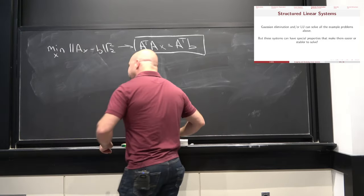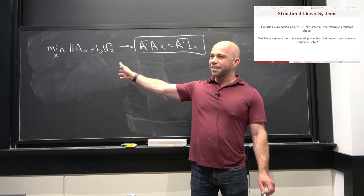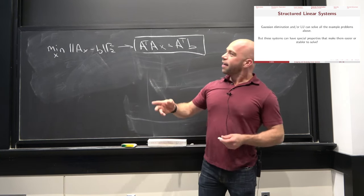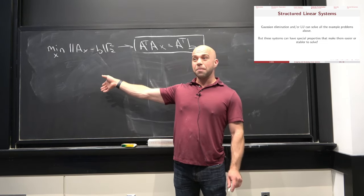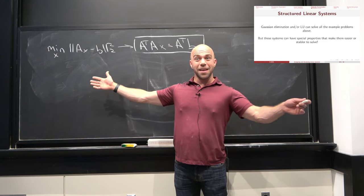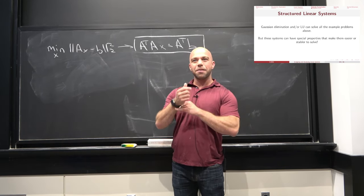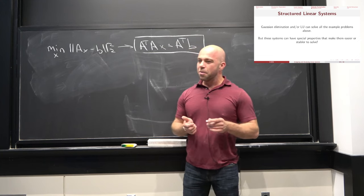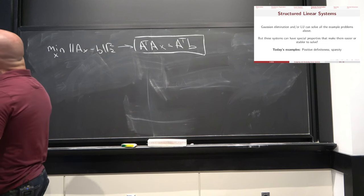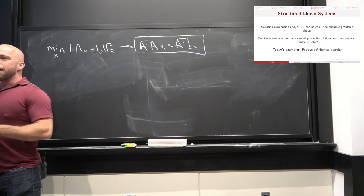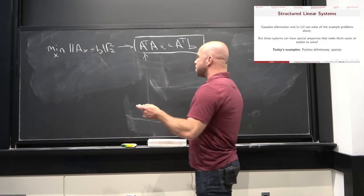In particular, what we're going to try and do today is justify a slightly different factorization: LL^T. Notice this is a special LU factorization where U = L^T, which is upper triangular — but it requires our matrix to be symmetric and positive definite. Let's make sure we remember what these terms mean. Gaussian elimination can solve any square linear system, but it may not be the best algorithm. The more we know about our matrix, the better we can do. These are examples of what we call structured linear systems.